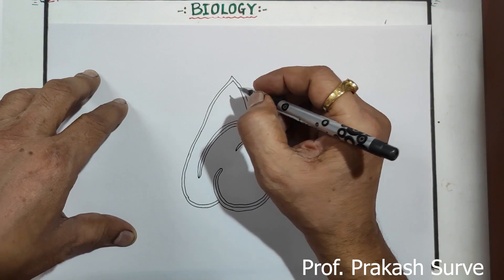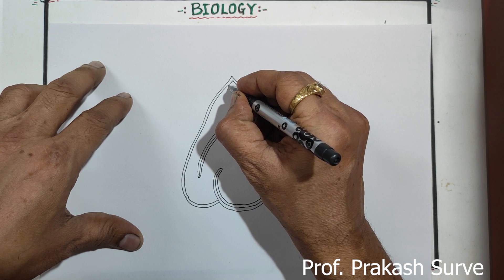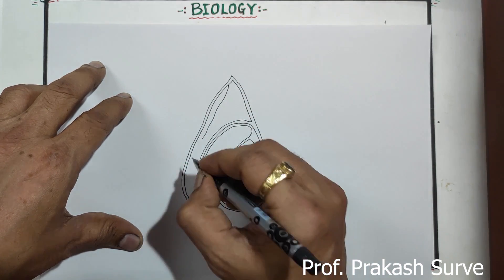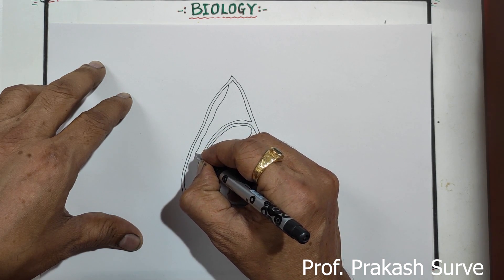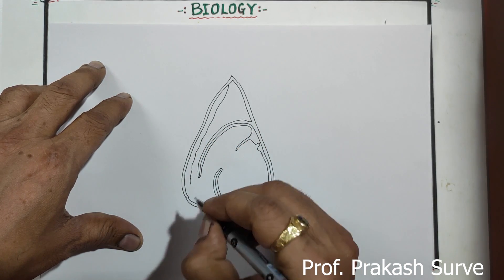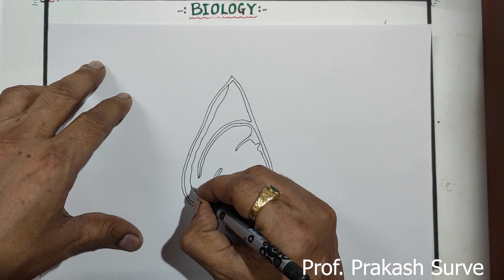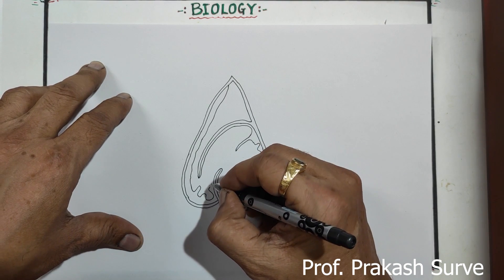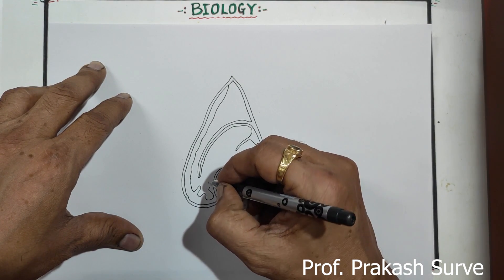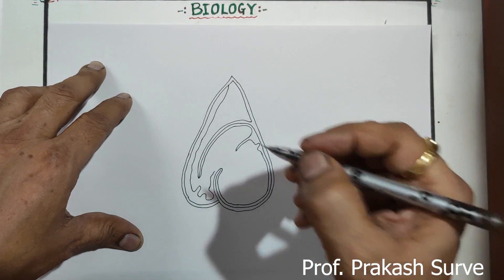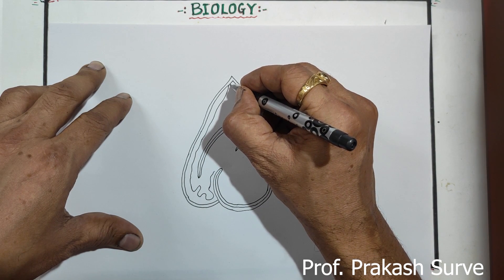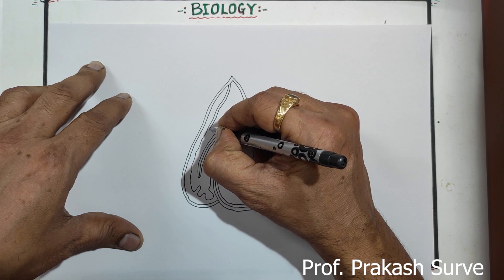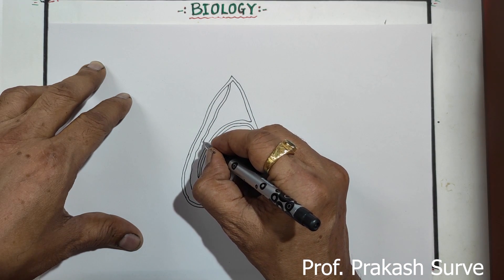Now we have to draw the vas deferens. So bring one line from here — don't make it straight, draw a little bit of curve in between. So like that, bring it up to here, draw corresponding to this. So this is the vas deferens.